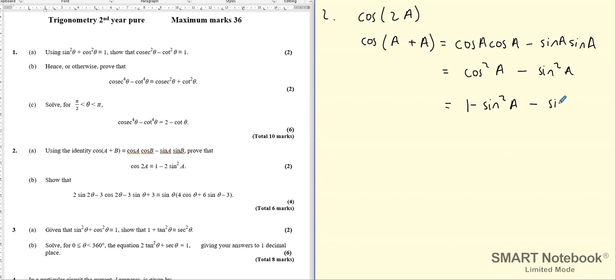We've got another sin²A. And if we simplify this, we get 1 minus 2sin²A. So that is part A done.